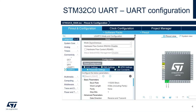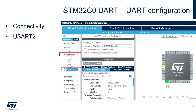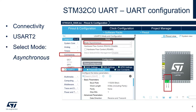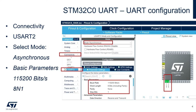Under CubeIDE, we will create a new project. The first thing we'll do is configure the USART2 — you'll find it under Connectivity. Select asynchronous mode, and for the parameters we'll use 115,200 baud, 8 bits of data, no parity, and 1 bit of stop. Make sure that the proper IOs have been selected, which are PA2 and PA3.